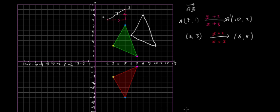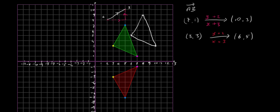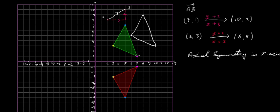That's it for translation. Now let's look at axial symmetry. We're going to take this triangle here and transform it using axial symmetry in the x-axis. So this is axial symmetry in the x-axis. Let's see how it works — the first point is (7, 1).